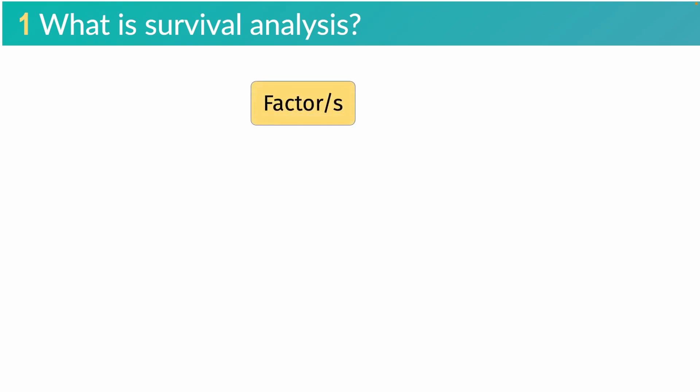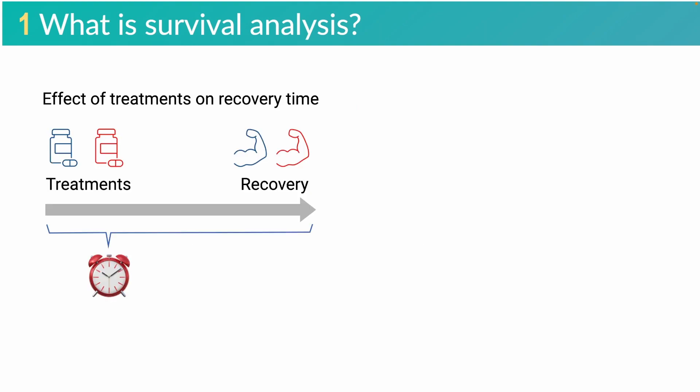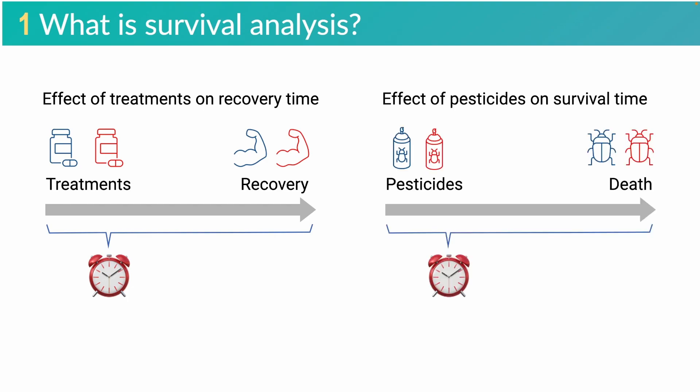Survival analysis can also be used to analyze the effect of a factor, or several factors, on the time until an event of interest occurs. For example, you may want to investigate the effect of treatment methods on the time until the recovery of an illness after treatment, or the effect of pesticide types on the survival time of an insect.